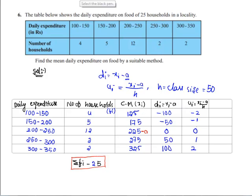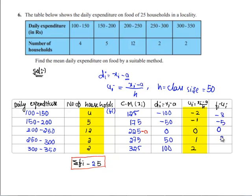Now we find the product of fi and ui. Multiplying: 4 into minus 2 gives minus 8; 5 into minus 1 gives minus 5; and the remaining products give 0, 2, and 4. The total sum sigma fi·ui is minus 7.